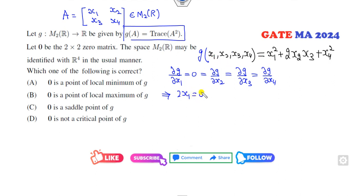Partial derivative of g with respect to x1 is 2x1 which is 0, partial derivative with respect to x2 is 2x2 which is 0, with respect to x3 is 2x3 which is 0, and with respect to x4 is 2x4 which is 0. So what does it mean? That means x1 is 0, x2 is 0, x3 is 0, and x4 is 0. So therefore what is my matrix A? 0, 0, 0, 0.